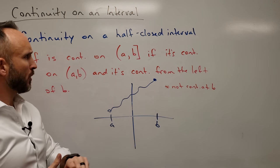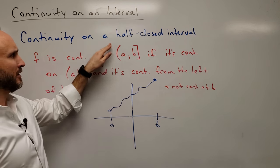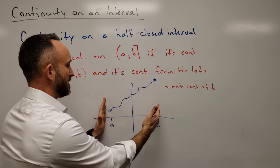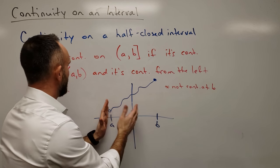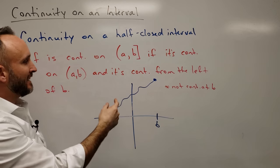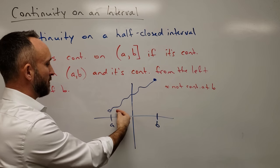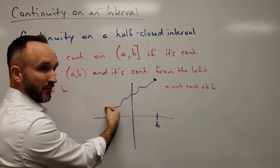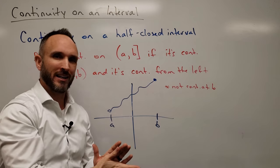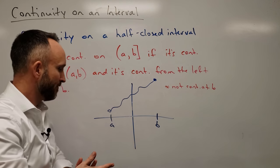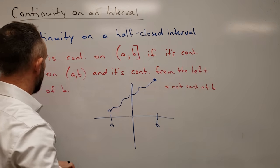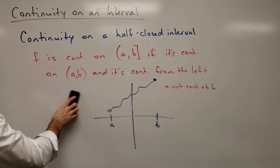For a fully closed interval, it's similar: the function is continuous on the open interval between the endpoints, continuous from the right of the left endpoint, and continuous from the left of the right endpoint. That covers continuity on various types of intervals.